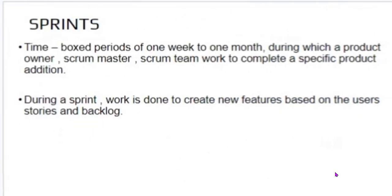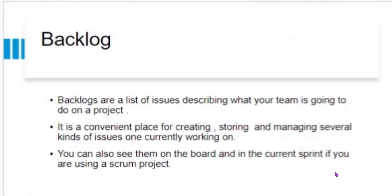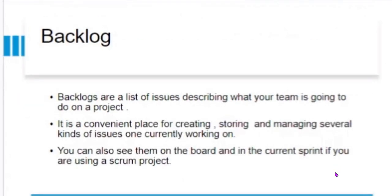What do we mean by Sprint? Sprints are a time-boxed period of one week to one month, during which a product owner, Scrum Master, and Scrum Team work to complete a specific product addition. During a Sprint, work is done to create new features based on the user stories and backlogs.